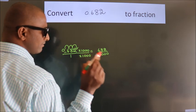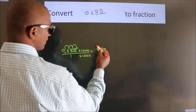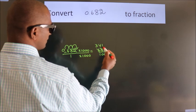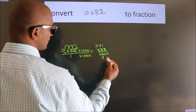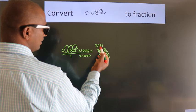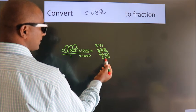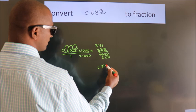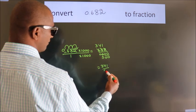Now I cancel with 2. 2 3s, 2 4s, 2 1s, 2 5s. These 0s as it is down. Further cannot be simplified. So our fraction is 341 by 500.